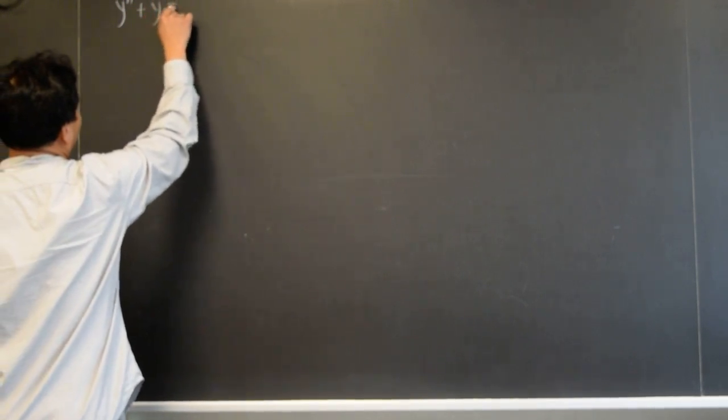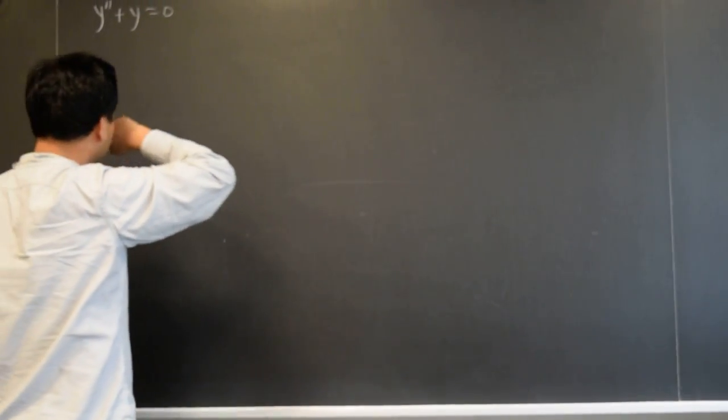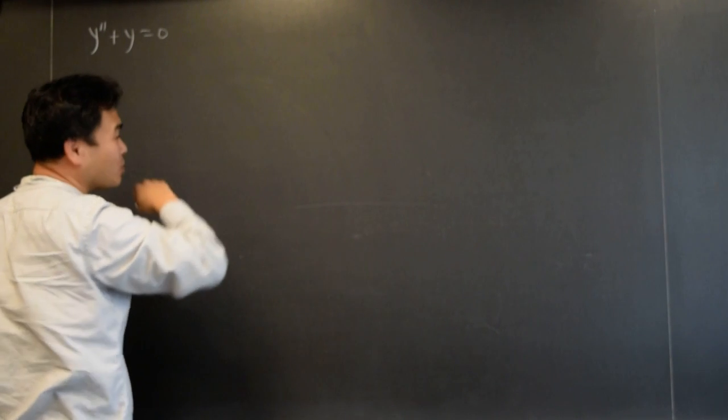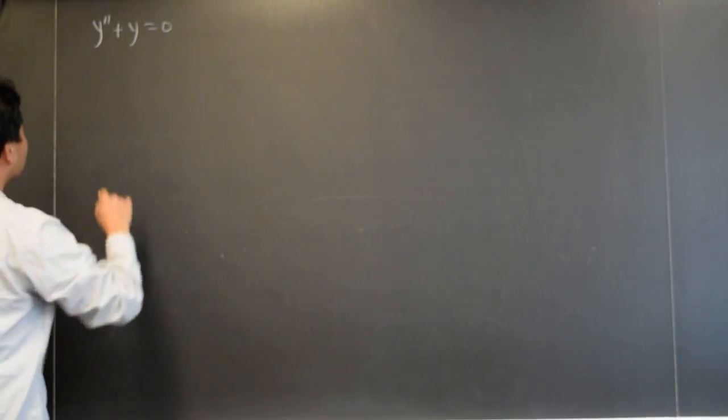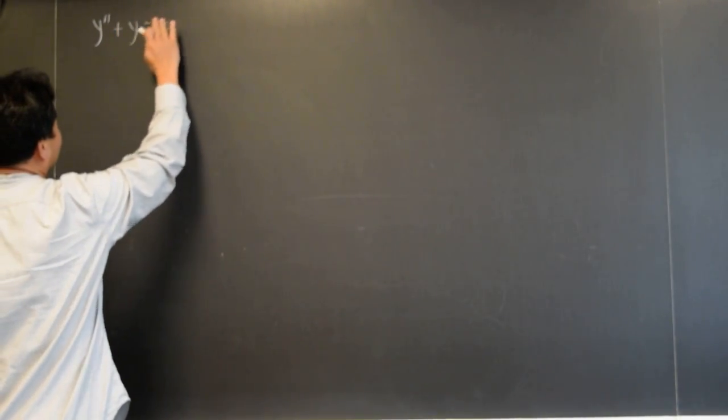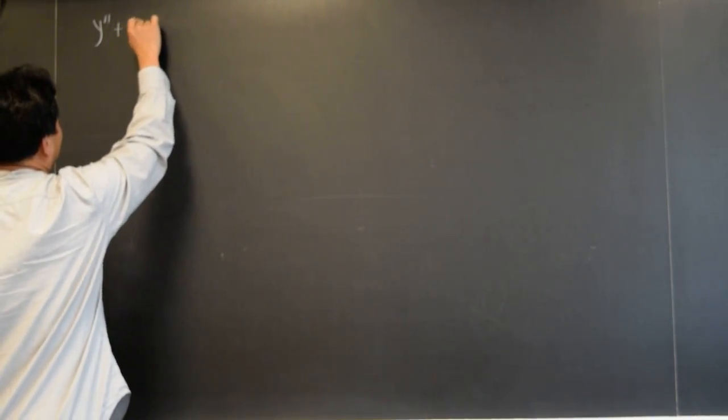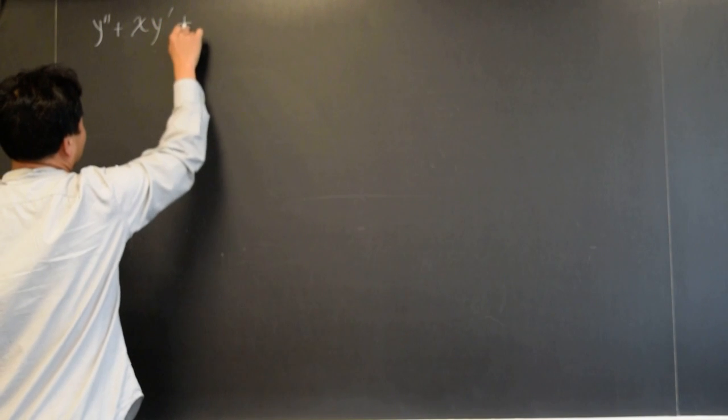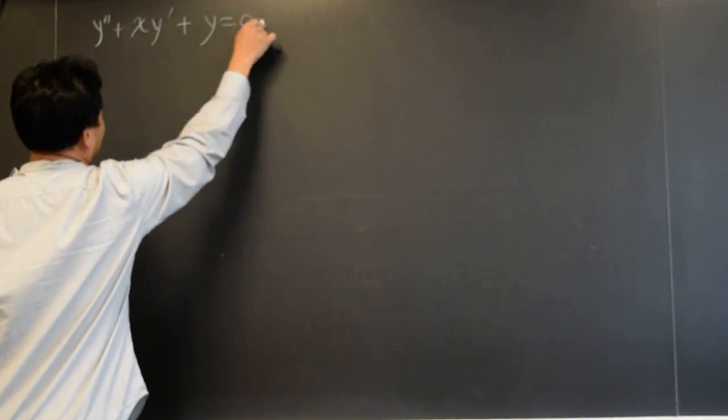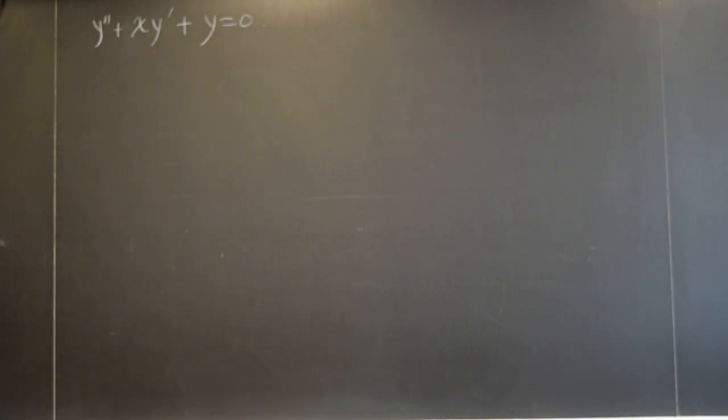xy prime plus y equals zero. I think we did this before. So let's put something here. xy prime plus y equals zero. This will be simple enough.